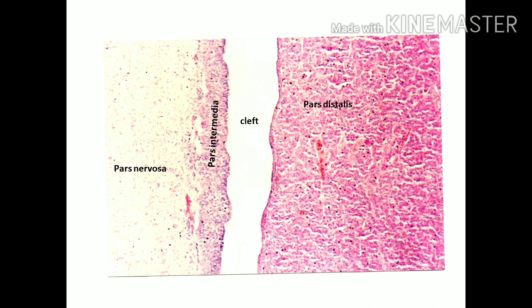In the original histological slide, the pars distalis shows all the acidophils, basophils, and venous sinusoids. The intraglandular cleft is visible, followed by the pars intermedia with colloid-filled vesicles and other cells. The pars nervosa or posterior pituitary consists of the nuclei of pituicytes and neuronal endings.